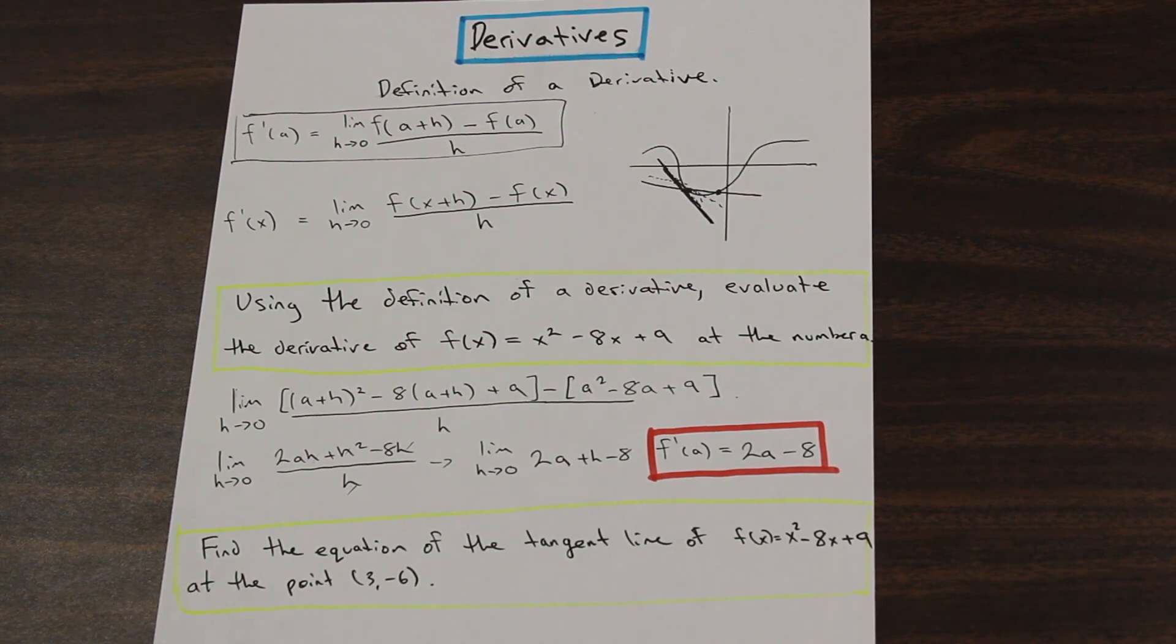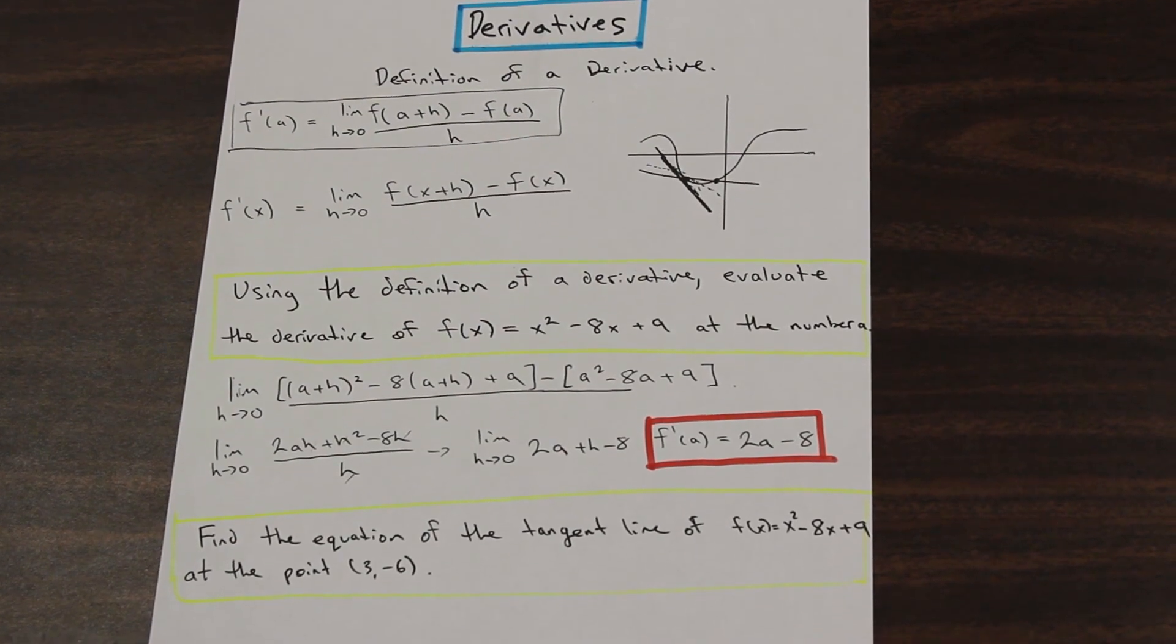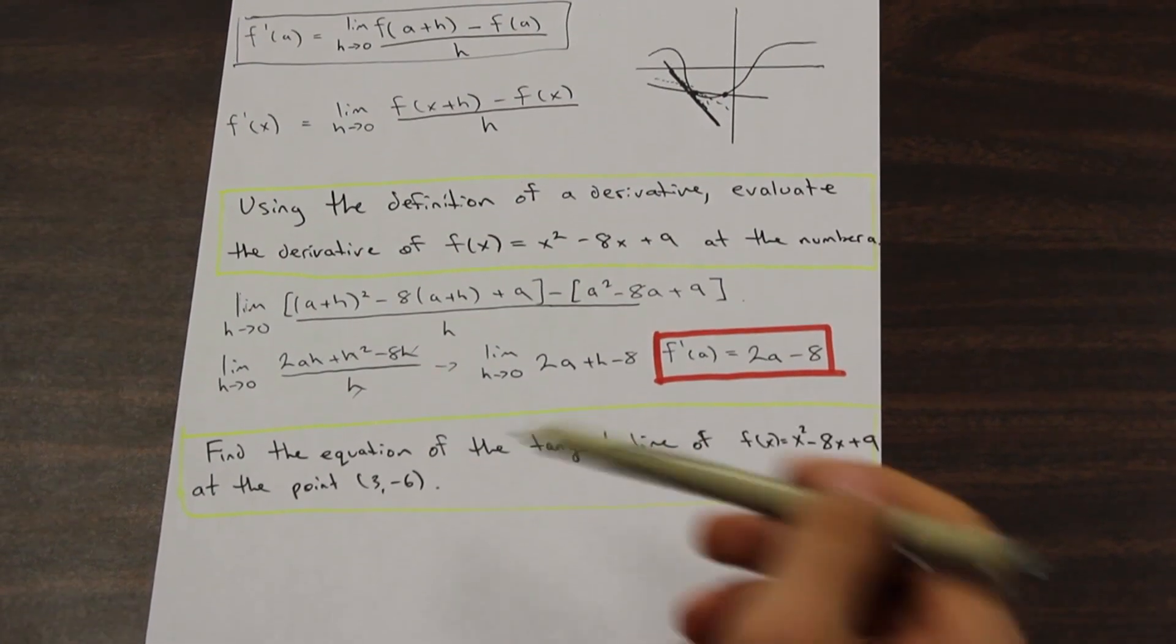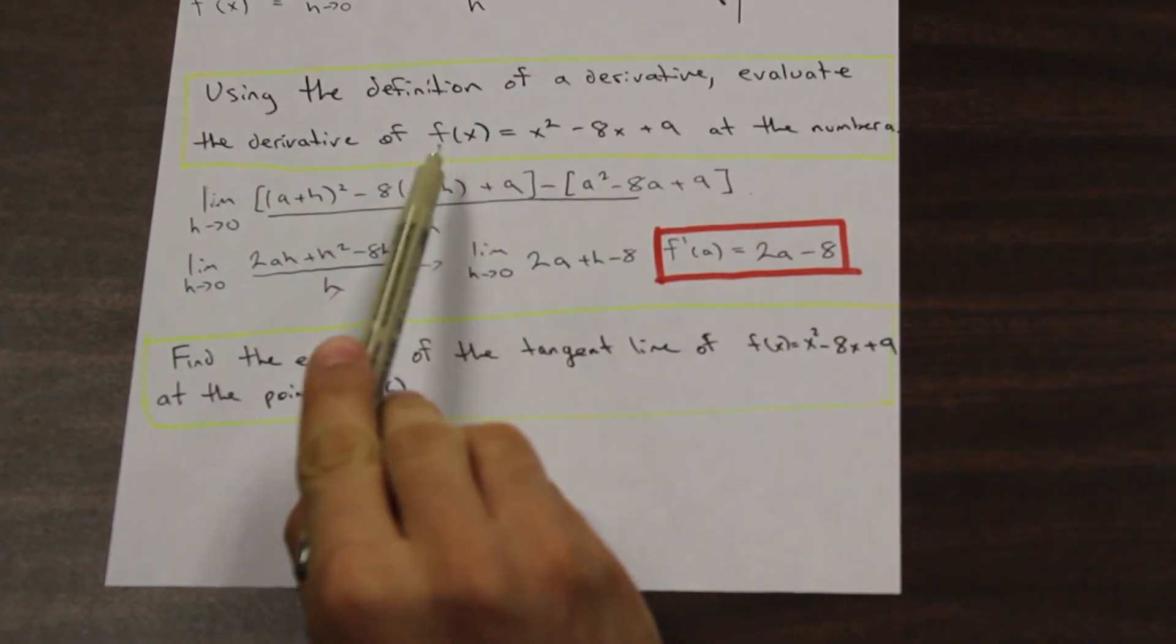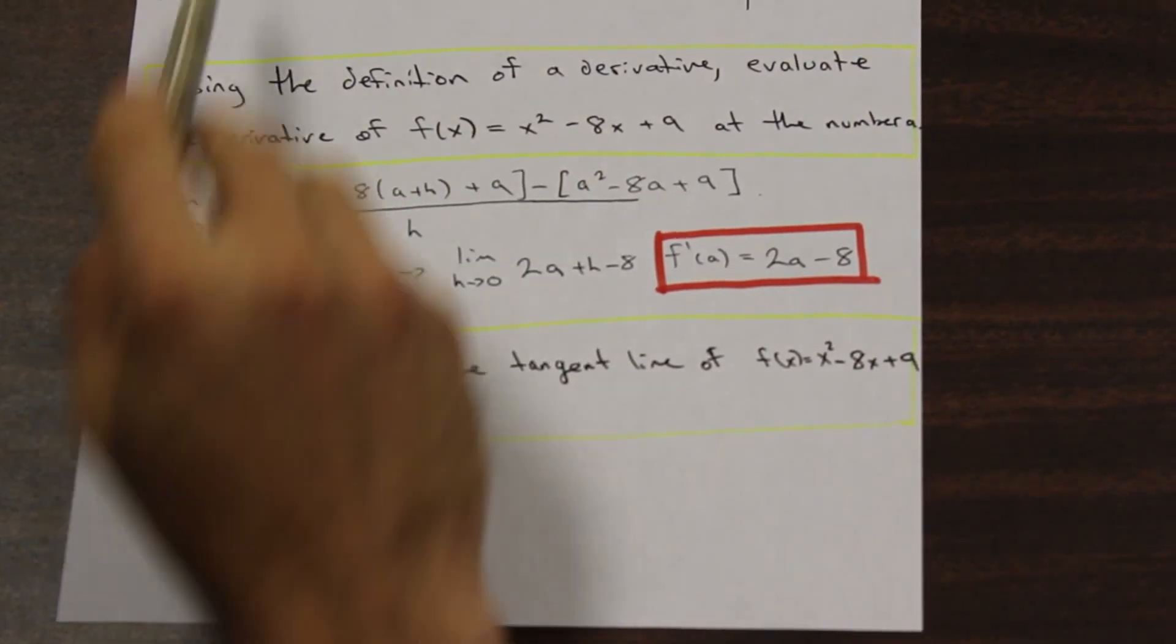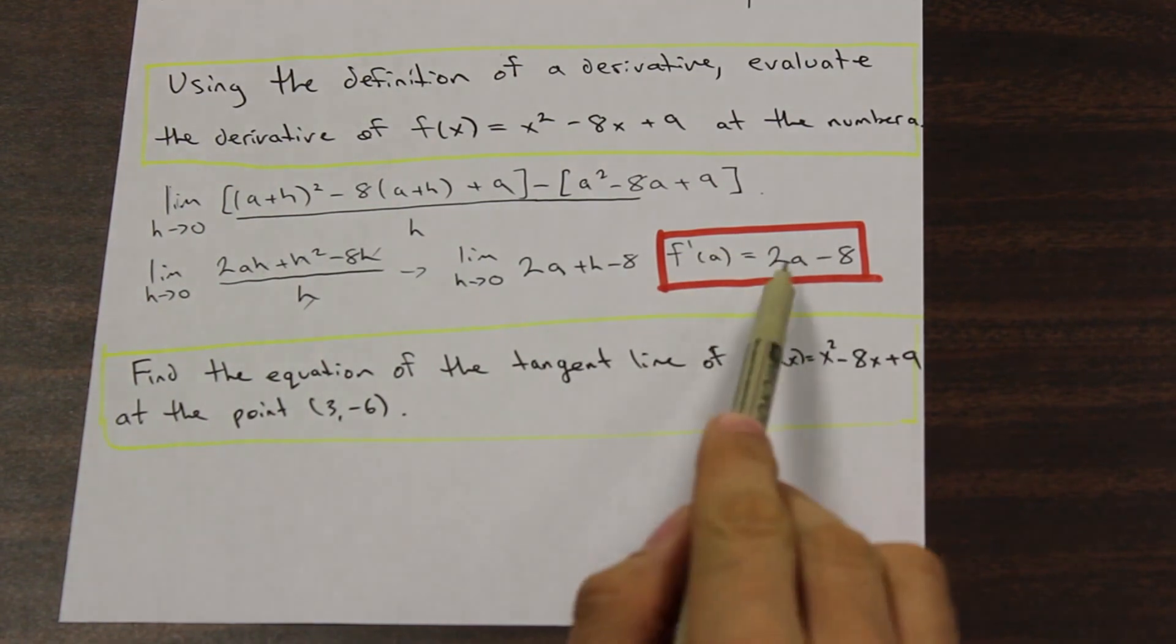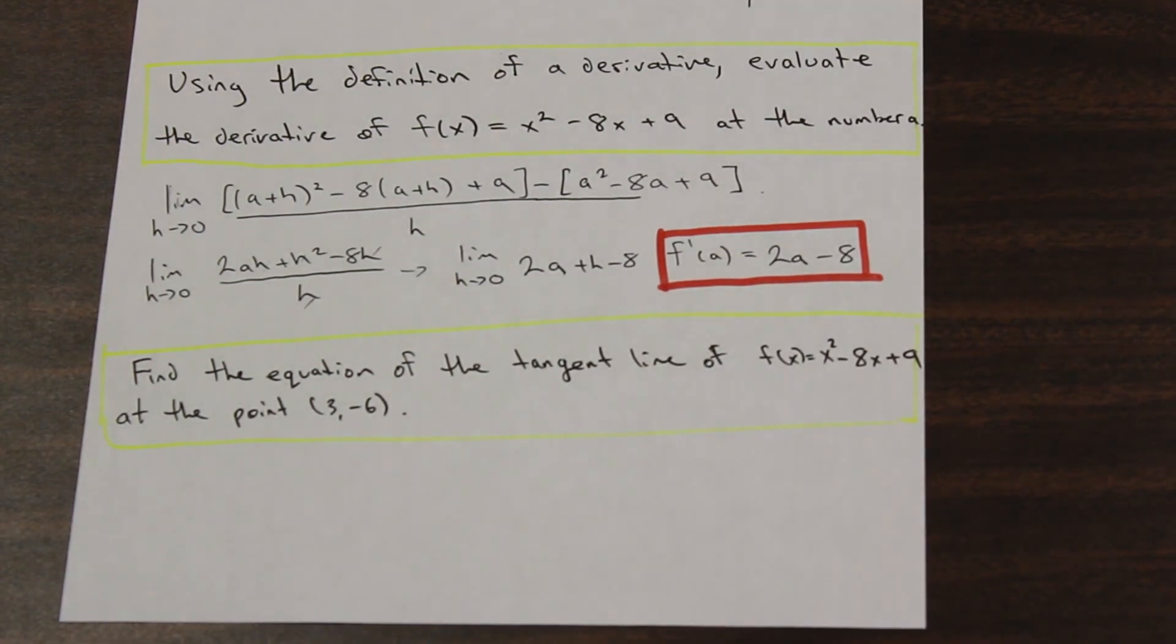And the question here asks us to find the equation of the tangent line of f(x) = x² - 8x + 9 at the point (3, -6). So if you've been paying attention up to this point, you'll know that we already solved for the derivative of that using the definition of a derivative, and we found it to be 2a - 8. So let's get started.